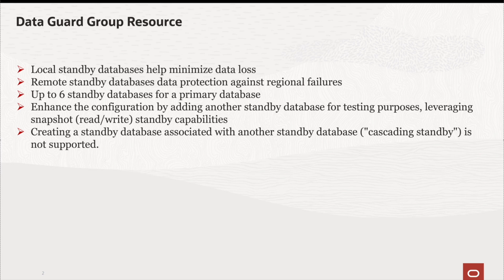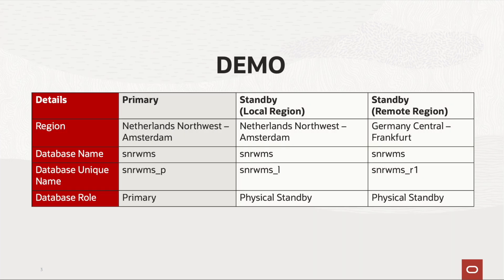This enhancement allows the creation of up to six standby databases for each primary database configured via OCI tooling. You can enhance the configuration by adding another standby database for testing purposes, leveraging snapshot read-write standby capabilities. Note that currently, creating a standby database associated with another standby database — cascade standbys — is not supported. Now we will take you through a demo to show how to create a local standby and a remote standby connected to the same primary database using the new data guard group resource functionality.